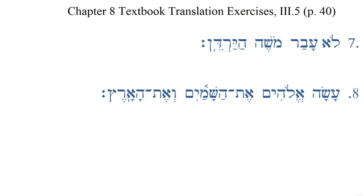Lo avar Mosheh ha-Yardayn. So we start out with lo, and that is our negation particle. It's used here with a verb, although it can be used with other things as well, but it's often used with a verb. So lo means 'not,' and then we have avar. With all the verbs we've seen so far, we have a third masculine singular perfect. In this case, we have an explicit subject, Moses.